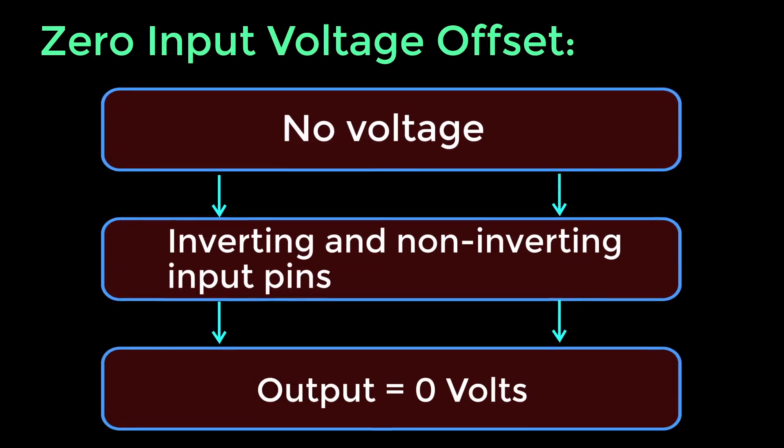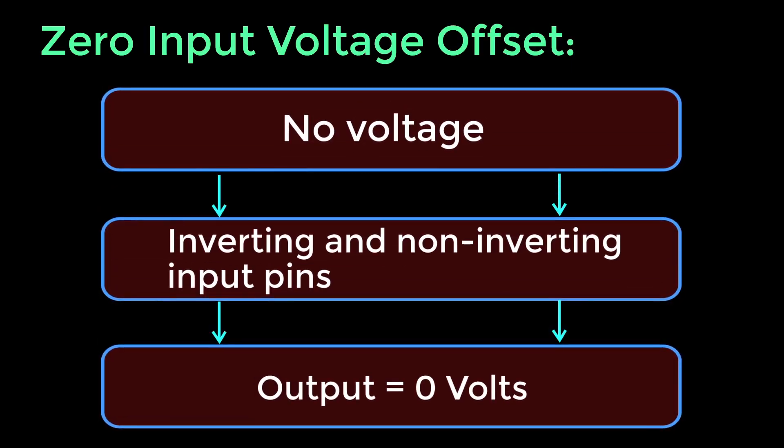Zero input voltage offset. In an ideal op-amp, if no voltage is applied to the inverting and non-inverting input pins, the op-amp will output a voltage of zero, since there is no difference at all of the voltage applied to the two input pins.